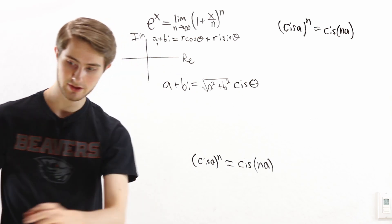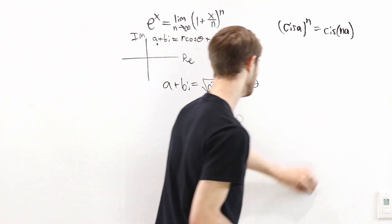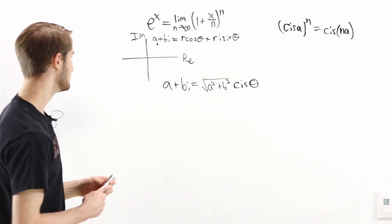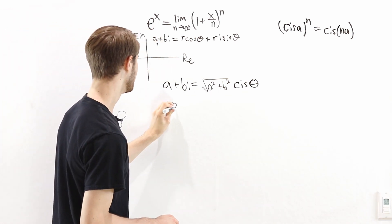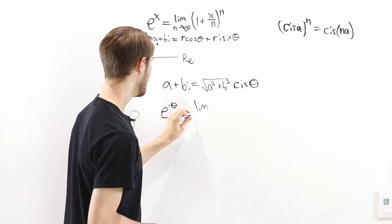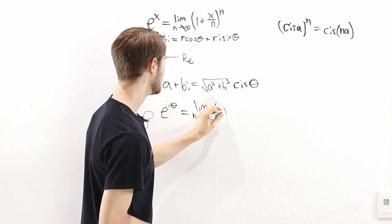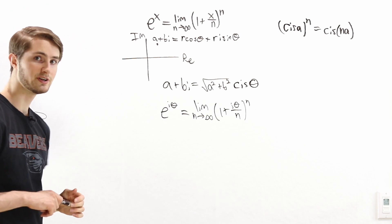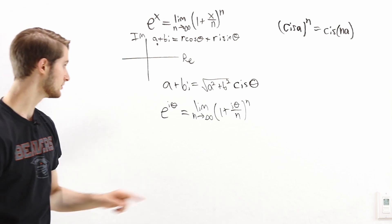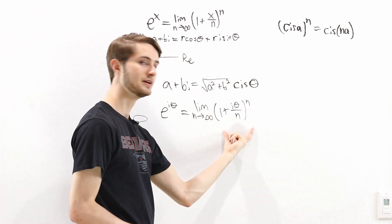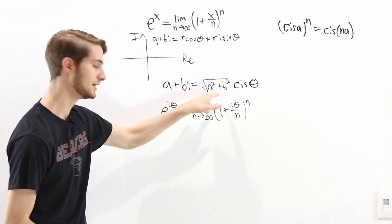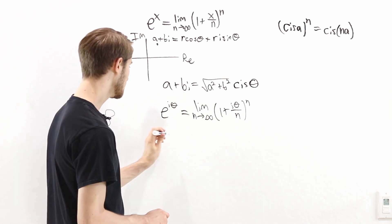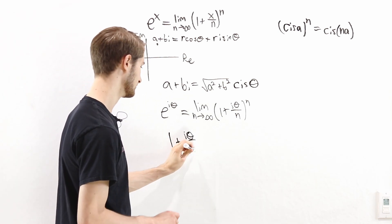Now let's use these results and return to our limit. We want to find e to the i theta. We suppose it equals the limit as n goes to infinity of 1 plus i theta over n, to the power of n. To find this limit, we're first going to express the inside using polar form, and then take the limit of that polar form. So let's ask: what is the polar form of 1 plus i theta over n?